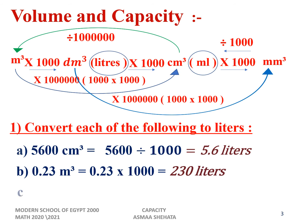Number c: 9.52 decimeter cube. I want to change it to liters. Decimeter cube and liter have the same meaning, so the answer equals 9.52 liters directly.